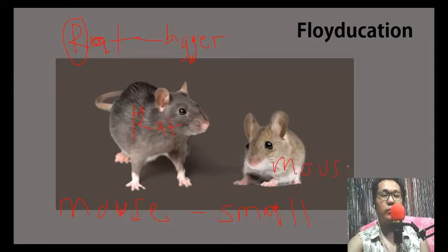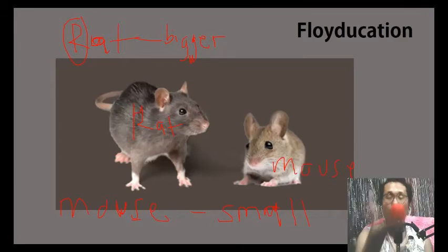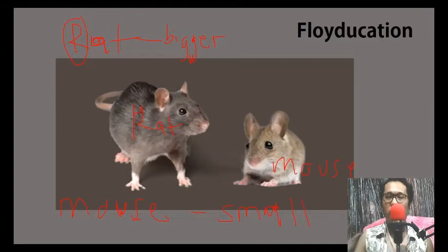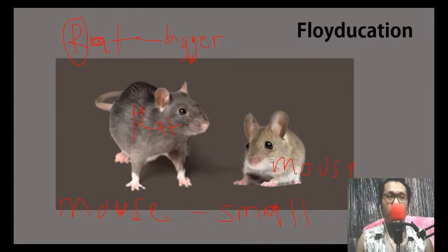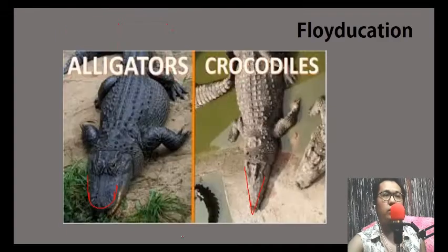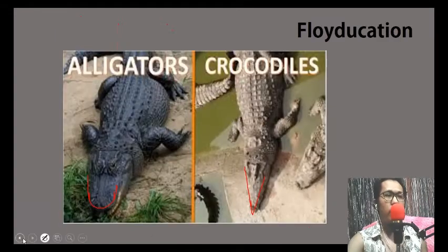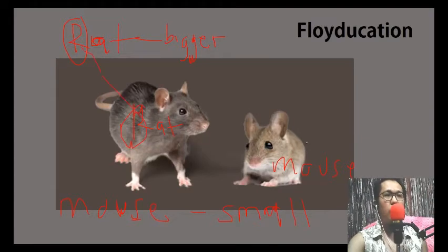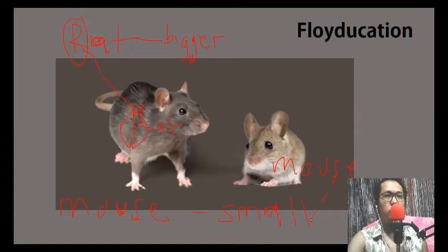So next time that you're going to see one of these, you know how to distinguish if it's a rat or a mouse. Again, rat, letter R, bigger. So rat is bigger. And then we have R. And mouse, we have S, small. Yes. There you are.